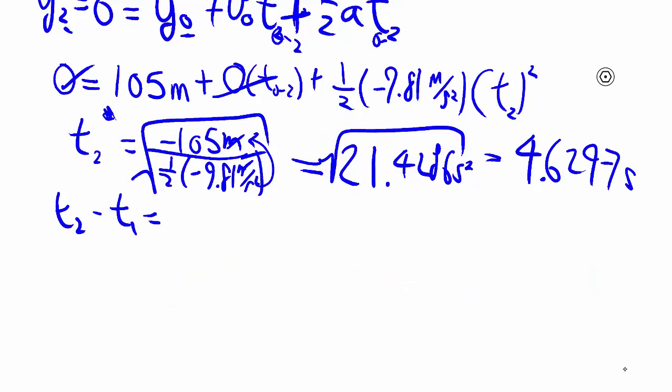But again, we're not interested in t2, we're interested in t2 minus t1. That's the amount of time he has to react. So we take that second, then minus 1.5 seconds to give us 3.1297 seconds.